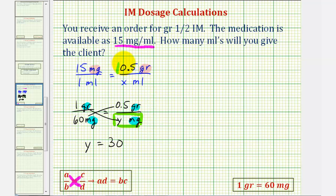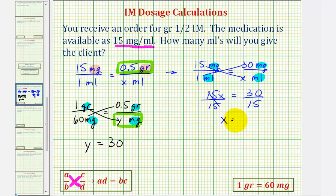Now we'll substitute 30 milligrams for 0.5 grains. This gives us the proportion 15 milligrams is to one milliliter as 30 milligrams is to X milliliters. Now we can cross multiply and solve for X. Fifteen times X equals 30, dividing both sides by 15, we have X equals two, which means the client should receive two milliliters.